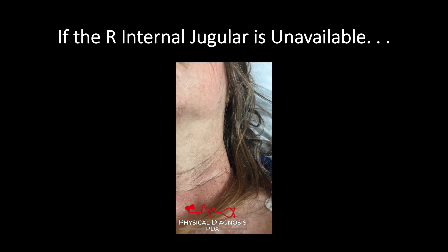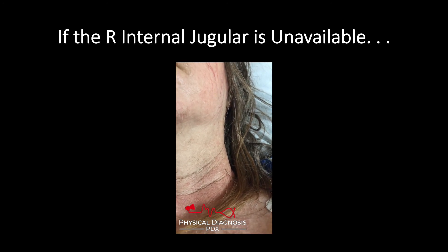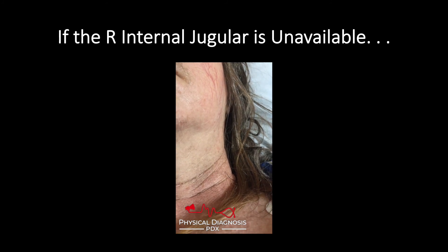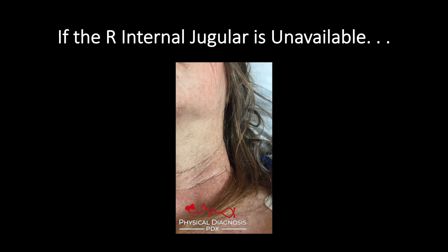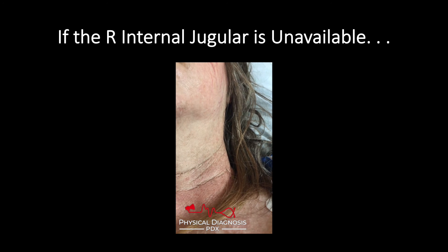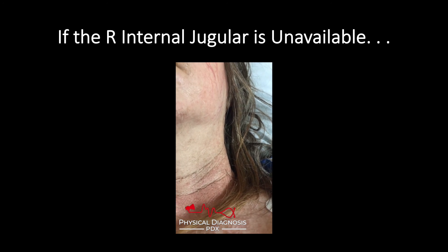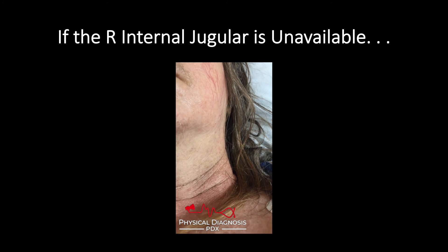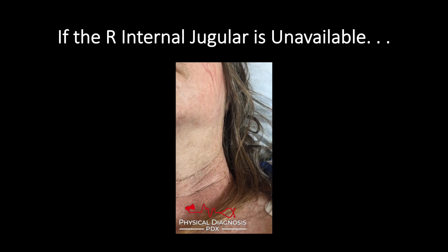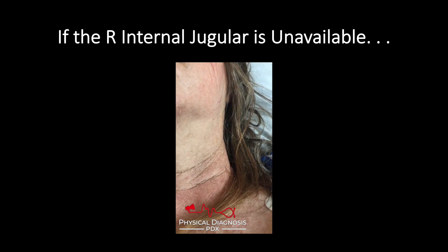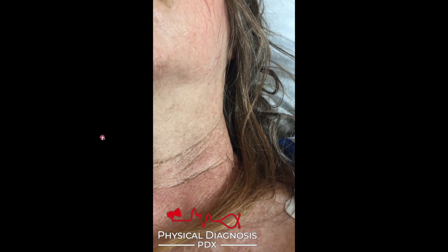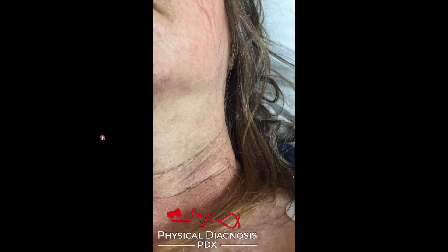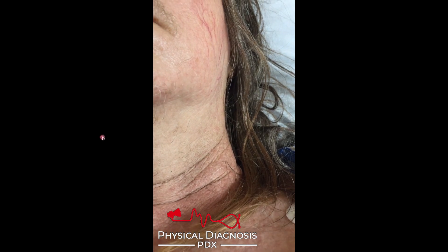We mentioned the go-to places for evaluating the JVP. Our first place was the right internal jugular vein — sometimes unavailable due to a catheter, thrombus, or simply not well seen. Then you should go to the left IJ. This video demonstrates the jugular venous pulse on the left side of the neck — you can absolutely see and appreciate it here.